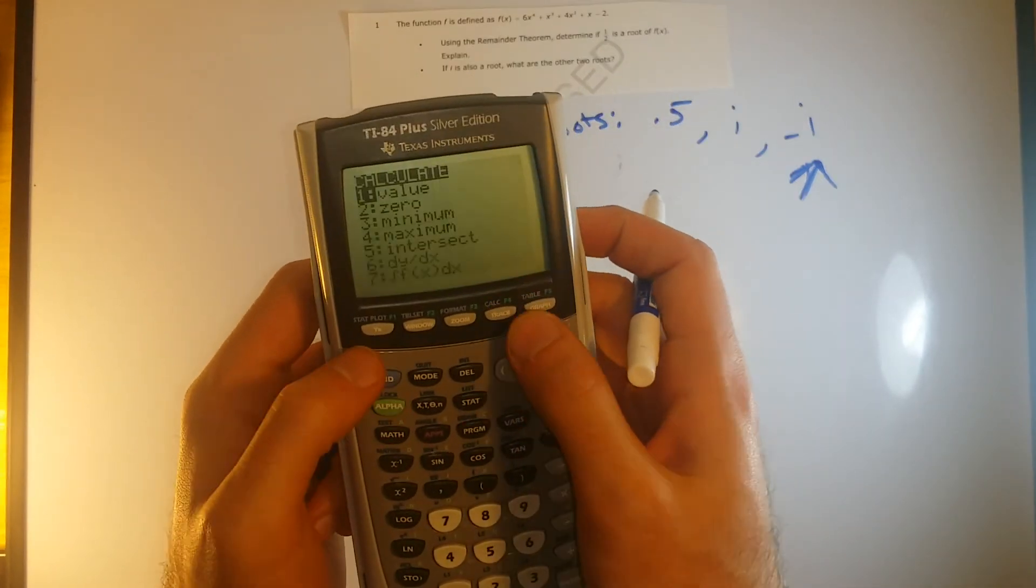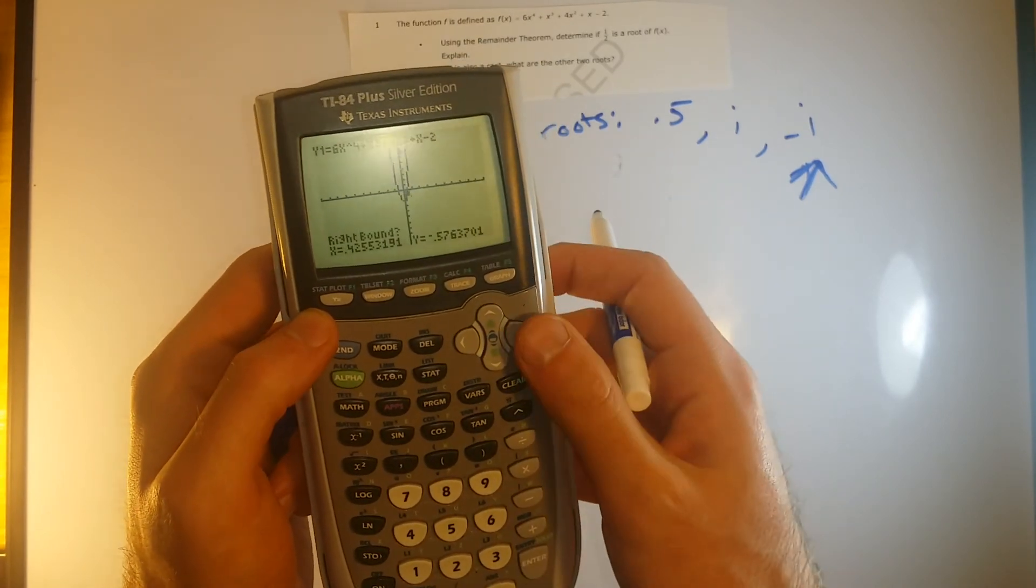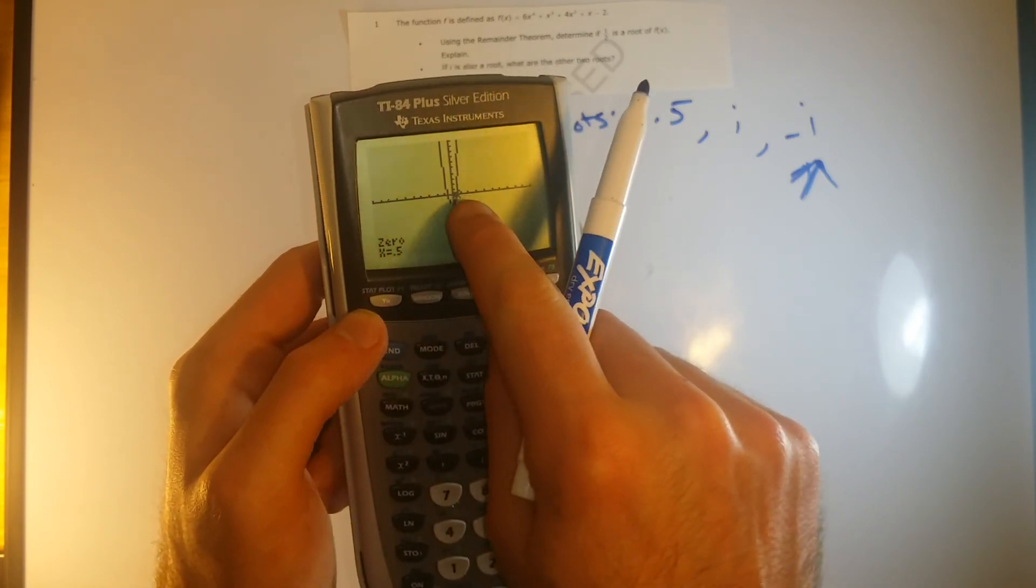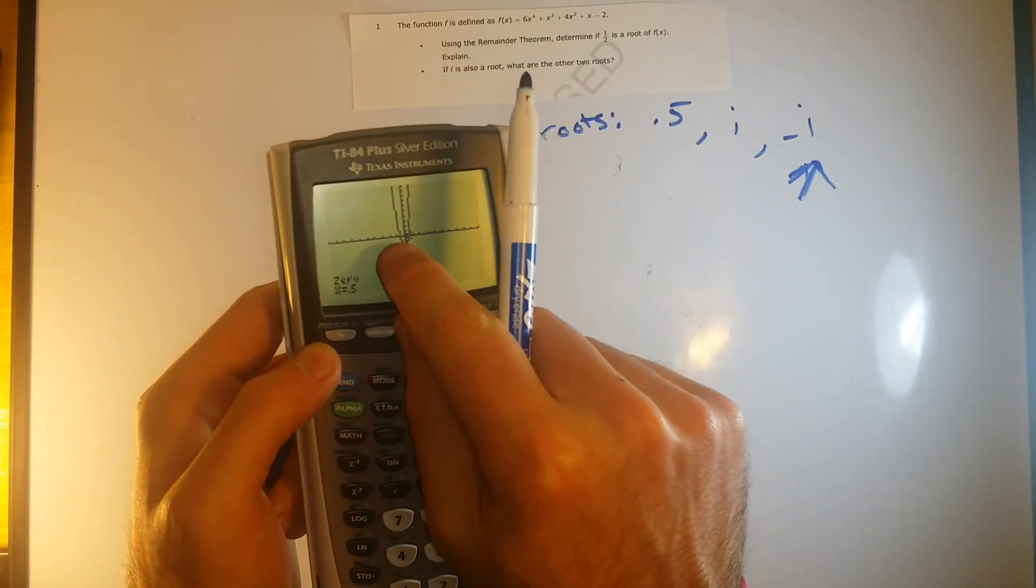If we were to go calculate that zero and calculate, that's going to come up as being that one half root. So, right there, x equals 0.5, that's that first root that they mentioned. So, we want to find out what's this other root.